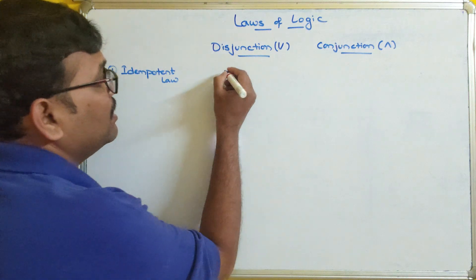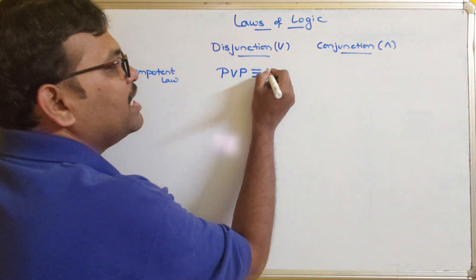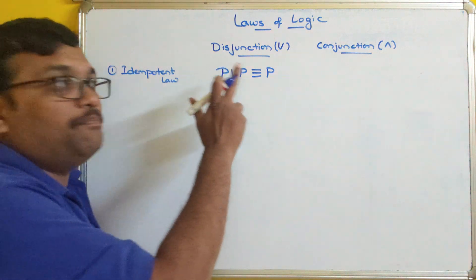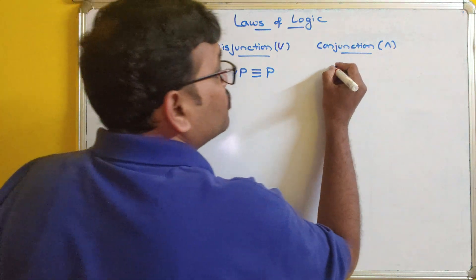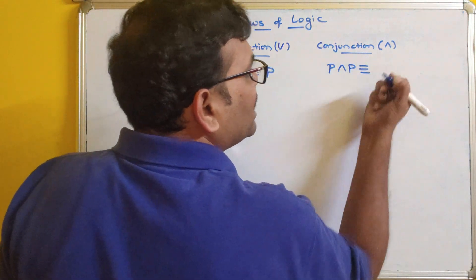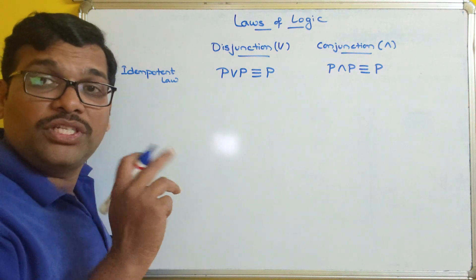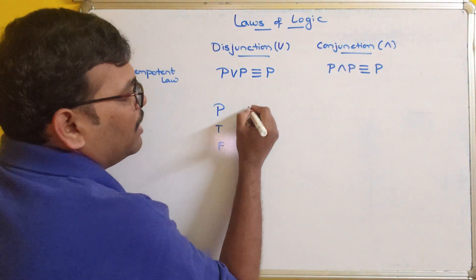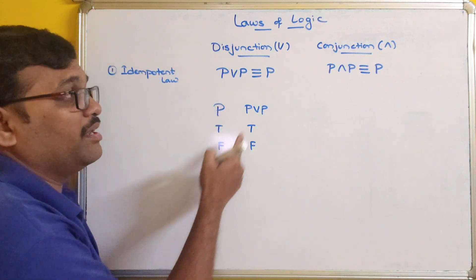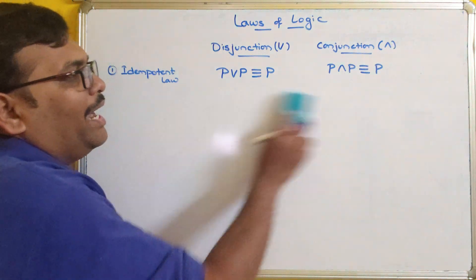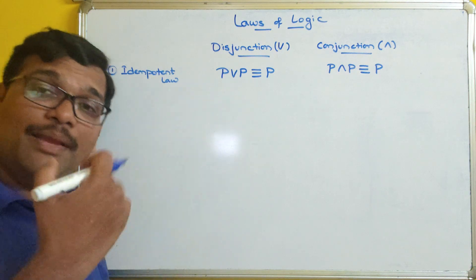The idempotent law states that if you apply disjunction for the same proposition, you get the same proposition as a result: p∨p ≡ p. Similarly for conjunction: p∧p ≡ p. For example, with truth table values true and false — true∨true = true, false∨false = false — which is just p. The same applies for conjunction.